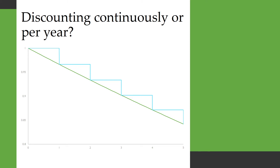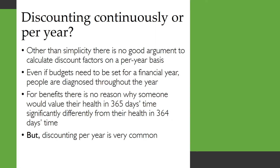Now you might wonder: should you be discounting continuously, or should you discount each year individually? You'll get a different discount factor depending on which you do. If you discount continuously, you'll have a smooth curve, whereas if you discount per year, you'll have a stepped-looking function. Other than simplicity, there's no good argument to calculate discount factors on a per-year basis, because people are diagnosed throughout the year, and for benefits, there's no reason why someone would value their health in 365 days' time significantly differently from their health in 364 days' time. But discounting per year is very common and widespread.